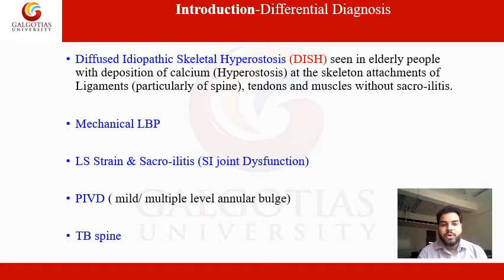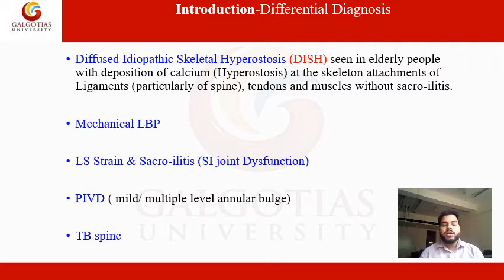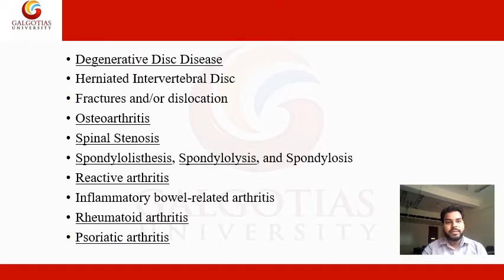PIVD means prolapsed intervertebral disc — mild or multiple level annular bulge — which is also differentiated from ankylosing spondylitis. TB spine, tuberculosis of the spine, also comes under the differential diagnosis of ankylosing spondylitis.